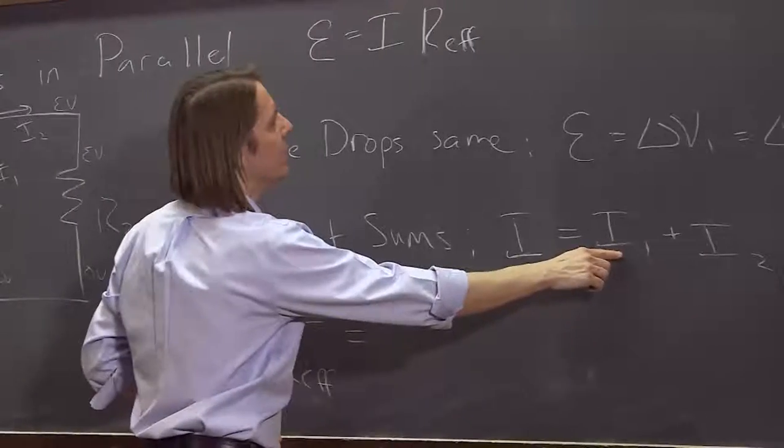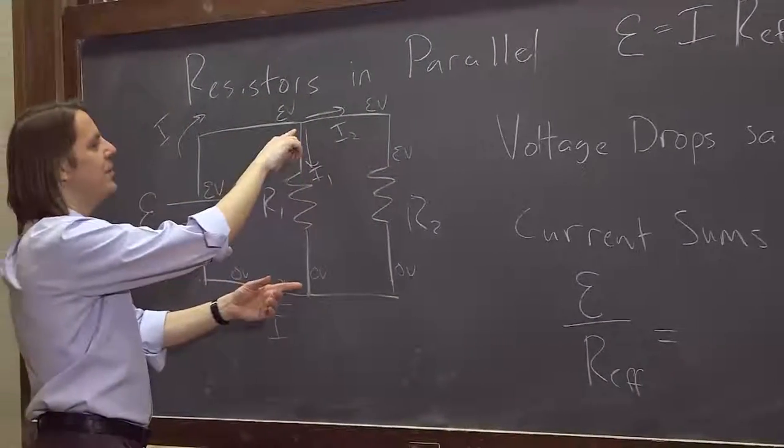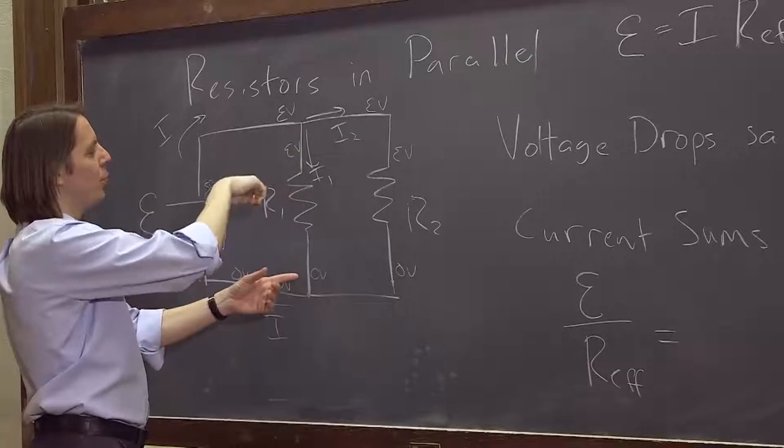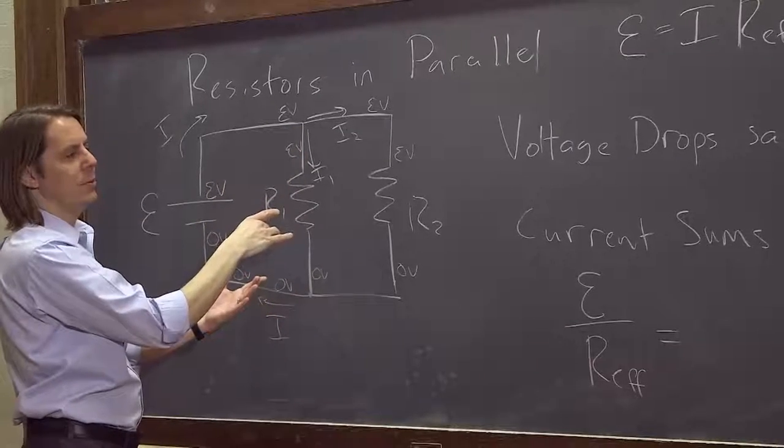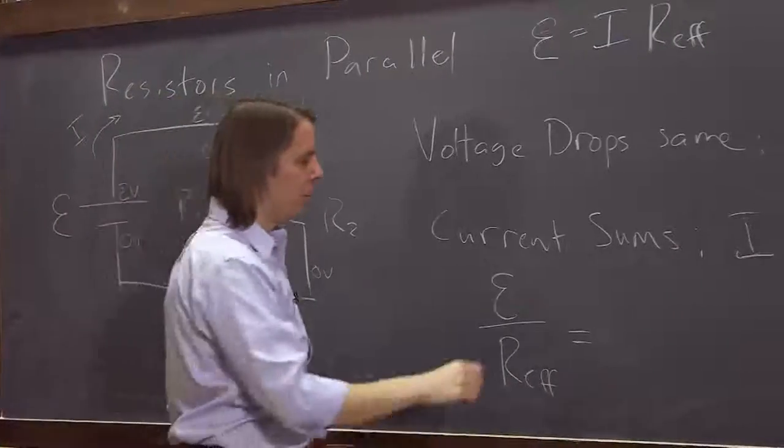And then I1, what is I1? Well, we know the voltage drop is delta V over R1 is I1. So you just use V equals IR. So I1 is delta V1 over R1.